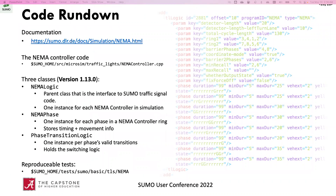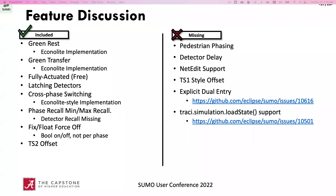Briefly, a code rundown: all the code we developed is inside the SUMO source. There's also a full page of documentation available on SUMO's website. The code is inside the traffic lights directory of the SUMO source code. In version 1.13.0, which came out last week, the code has been rewritten to a more object-oriented approach with three main objects. There are also reproducible tests available in the SUMO test directory. The features we added as part of this work are: green rest, green transfer, fully actuated mode, latching detectors, cross-phase switching, phase recall, fixed float force off, and TS2-style offsets.